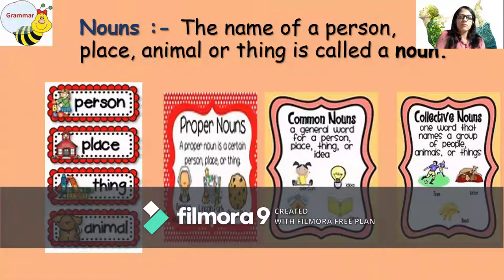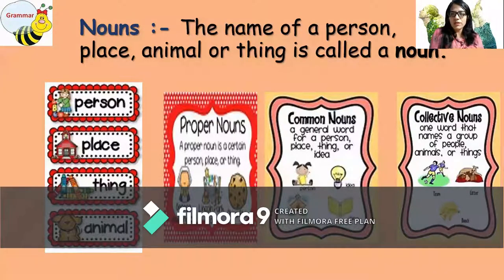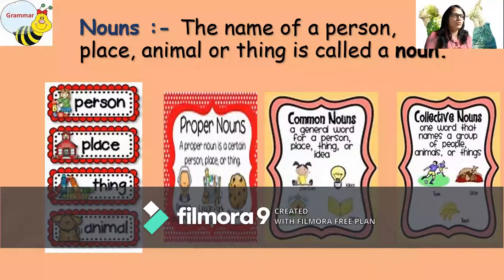What is a proper noun? Specific names like Pariniti, Shifali, Rhea — these are examples of proper nouns. And if we talk about common nouns, these are the general names like student, teacher, players.